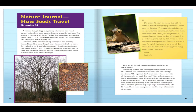Some oak trees produce acorns every other year instead of every year. Other oak trees produce very large crops of acorns every four to ten years. These same trees produce smaller crops of acorns in other years.